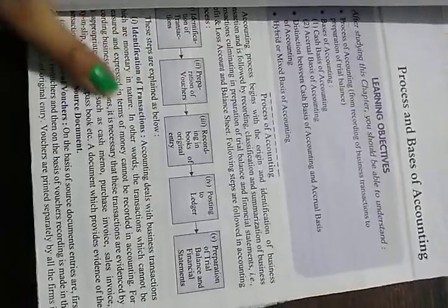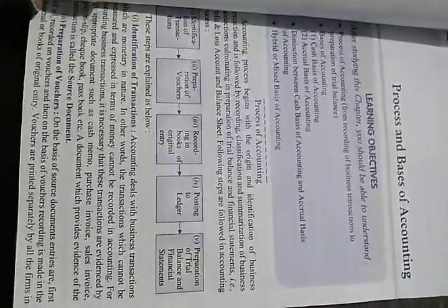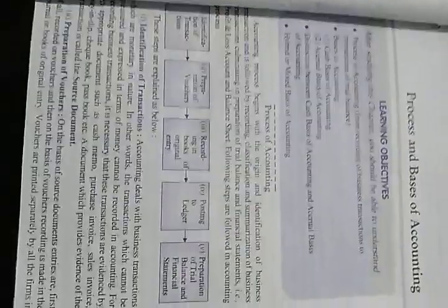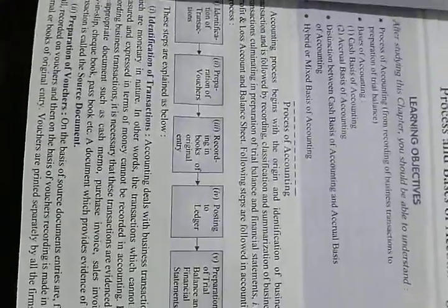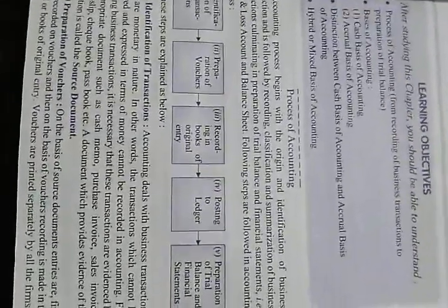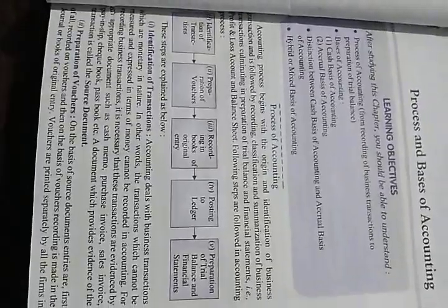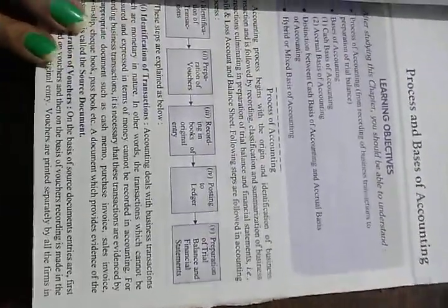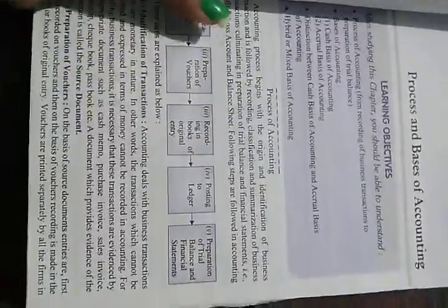These steps are explained below. First, identification of transaction. Accounting deals with business transactions which are monetary in nature. Transactions which cannot be measured and expressed in terms of money cannot be recorded in accounting. We record only those transactions related to monetary dealings. For example, a customer coming into a business and buying a wallet is a monetary transaction, but a customer merely asking the price of a product is not recorded because it is not a monetary transaction.